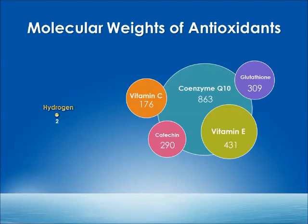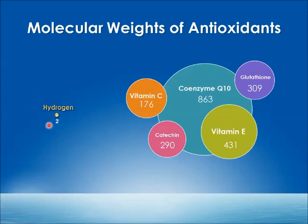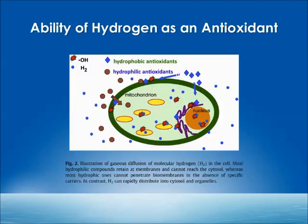If you look at the molecular weights of different antioxidants: vitamin C, which is a popular one, is 176; vitamin E and coenzyme Q10 is a huge molecule at 863. All of these antioxidants are very large molecules that cannot be absorbed very well by the body, and cannot get to where they need to go to eliminate free radicals. Hydrogen, on the other hand, is very tiny — it has a molecular weight of 2 — and is able to pass through any membrane very easily to get to where the free radicals are formed, inside the mitochondria.